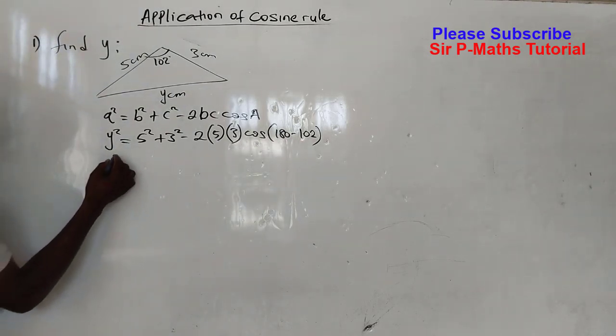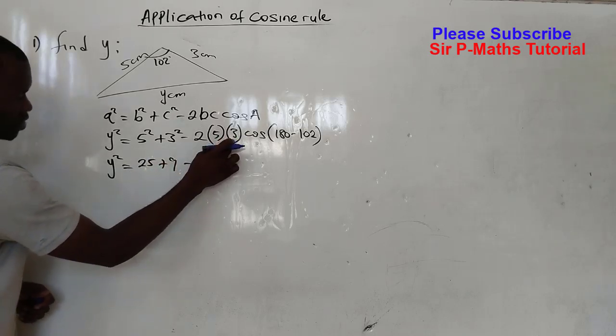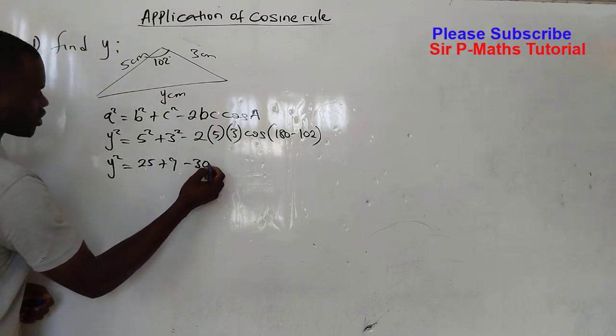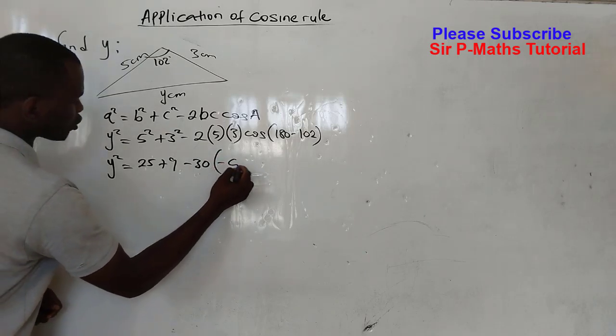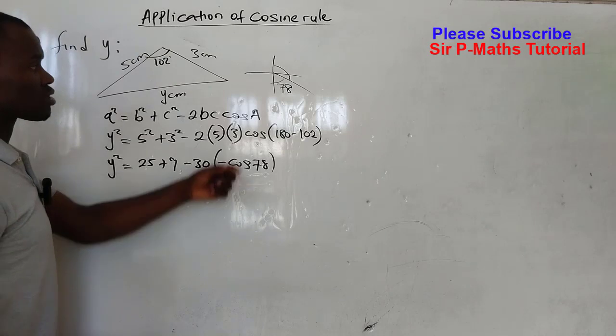So I'll have y² = 25 + 9 - 5 × 3, 15 × 2 here is 30, and then I'll have -cos 78. So I added negative because cosine is negative on the second quadrant.